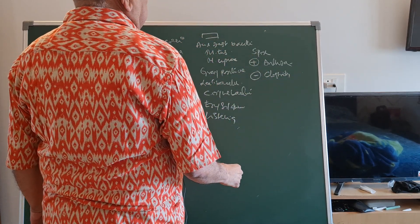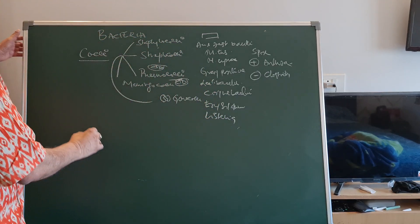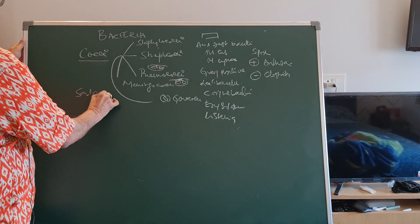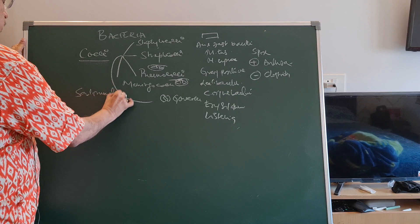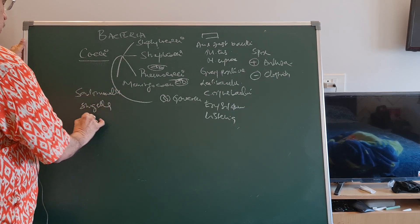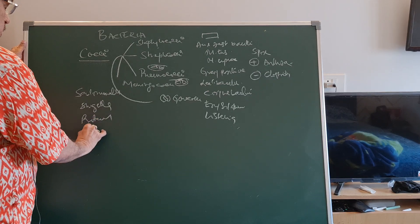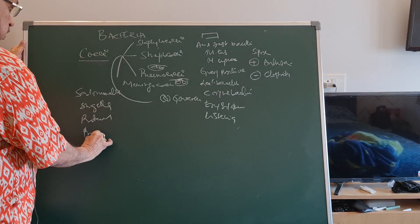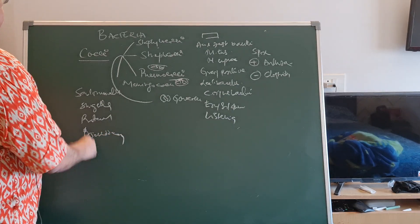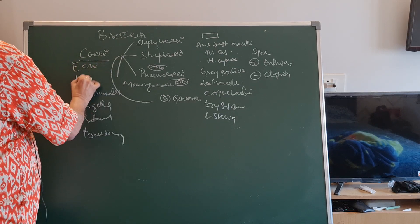Next is gram-negative bacilli. Gram-negative bacilli are enteric organisms, mostly Salmonella, Shigella, Proteus, Pseudomonas, E. coli, Klebsiella.